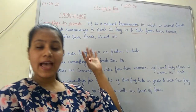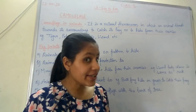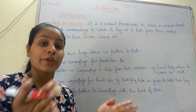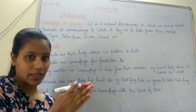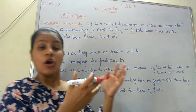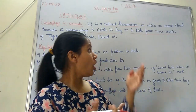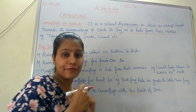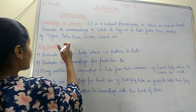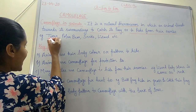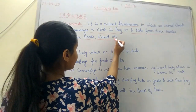So, camouflage in animals means animals use their body color or their body pattern to blend with their surroundings for two purposes: either to catch their prey, or to hide from their enemies. A few examples of animals showing camouflage are: tiger, polar bear, snake, lizard, etc.